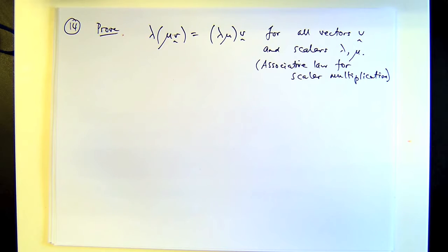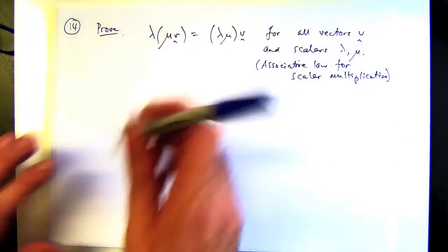So how would we prove it? Well, in previous proofs, we did component form. Let's try that again. With these kinds of proofs, the idea is to work component-wise with real numbers, real numbers that we know some of the basic laws about.